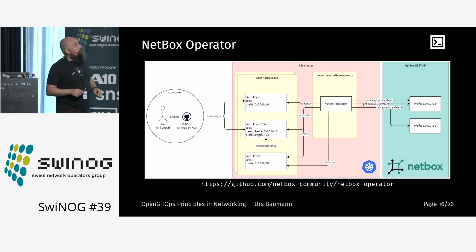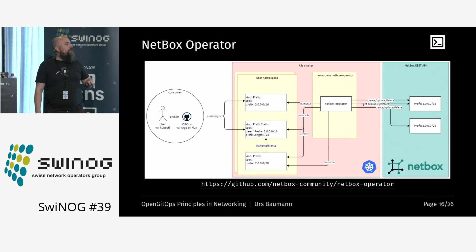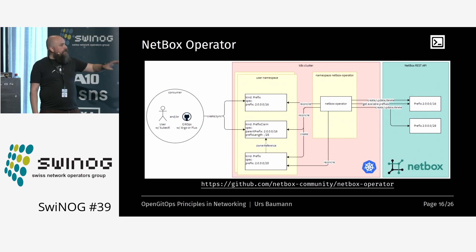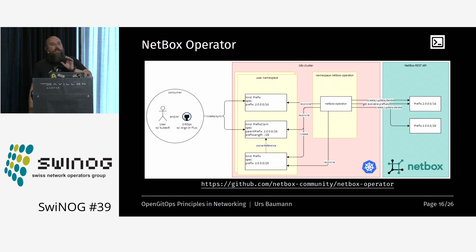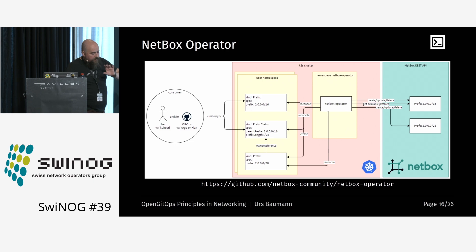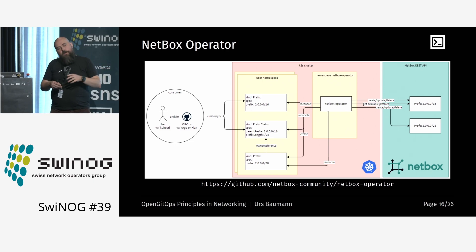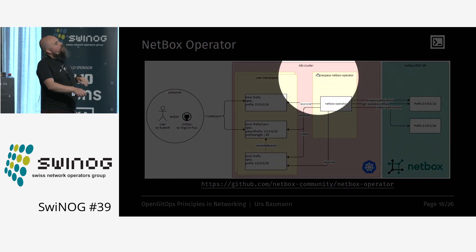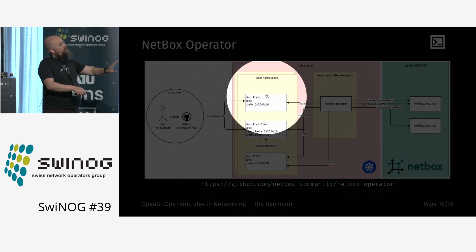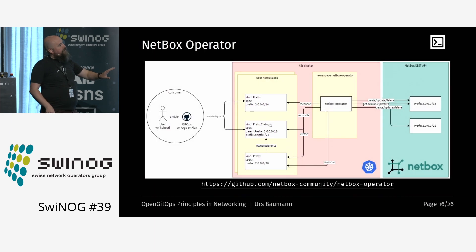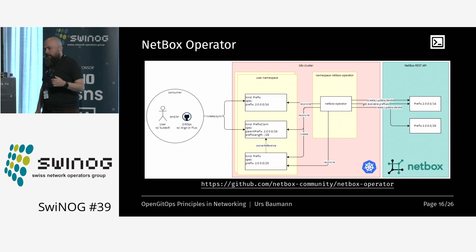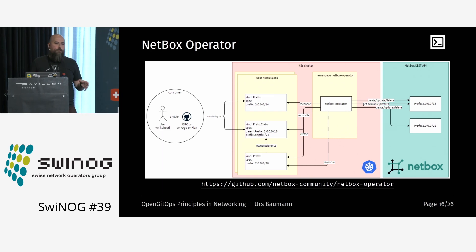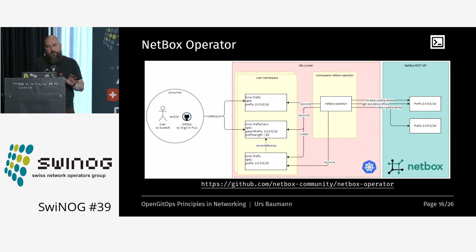Also really new is the NetBox operator. The Swisscom 5G team released it a few weeks ago. As I mentioned, managing third-party applications and IP addresses can be challenging. In this case, what they are doing is: you can create a prefix in Kubernetes with custom resource definitions and claim a prefix similarly to a volume, then use it in configurations. It's just a way to claim IP addresses automatically within the GitOps ecosystem. Really new — I haven't tested it yet, but I like that it's open source.